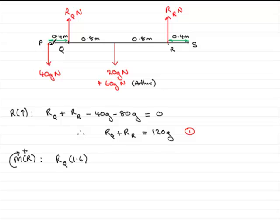And this 40g would want to turn about R in this direction, anti-clockwise. So therefore it's going to be minus 40g multiplied by the distance, 2 metres. Now we come on to this force.